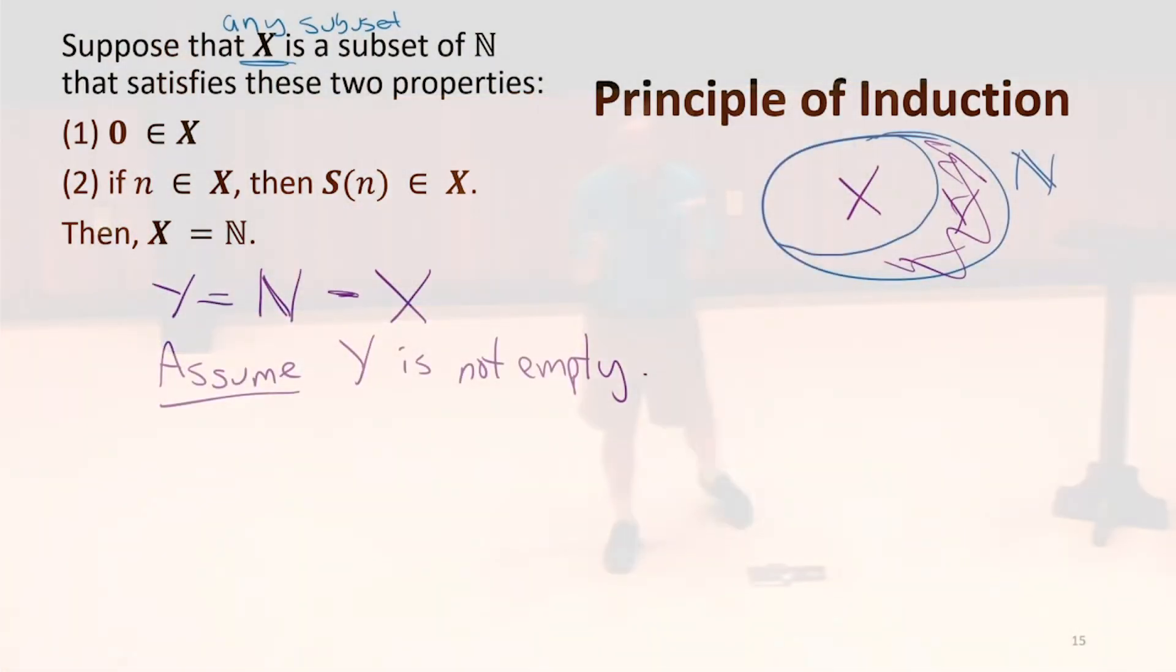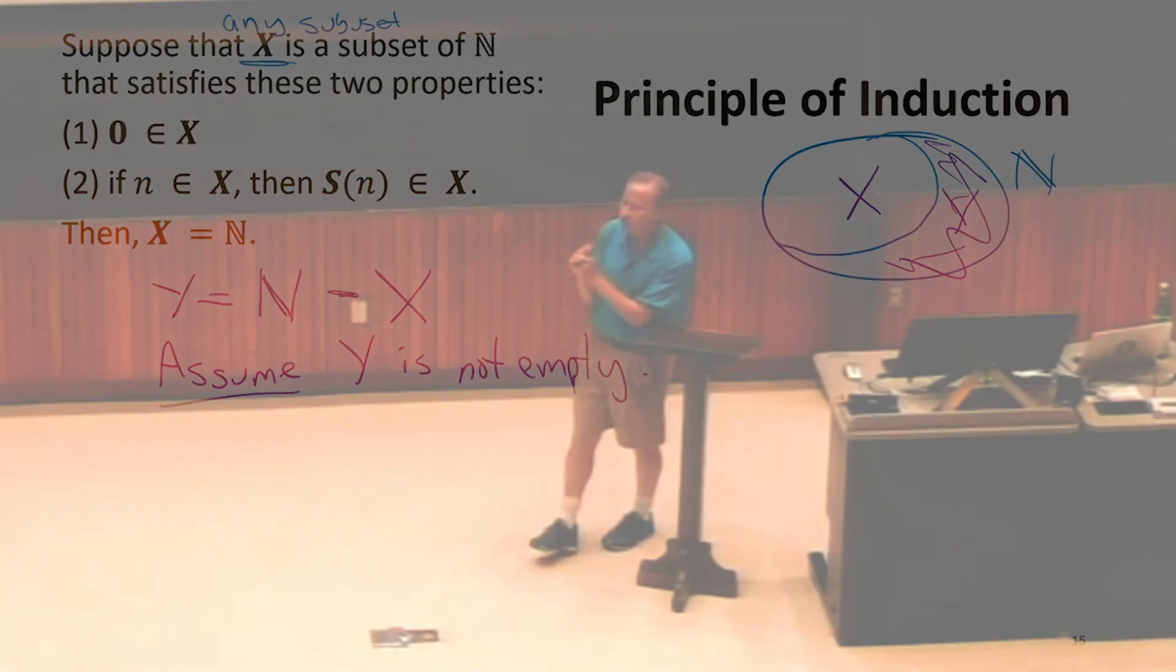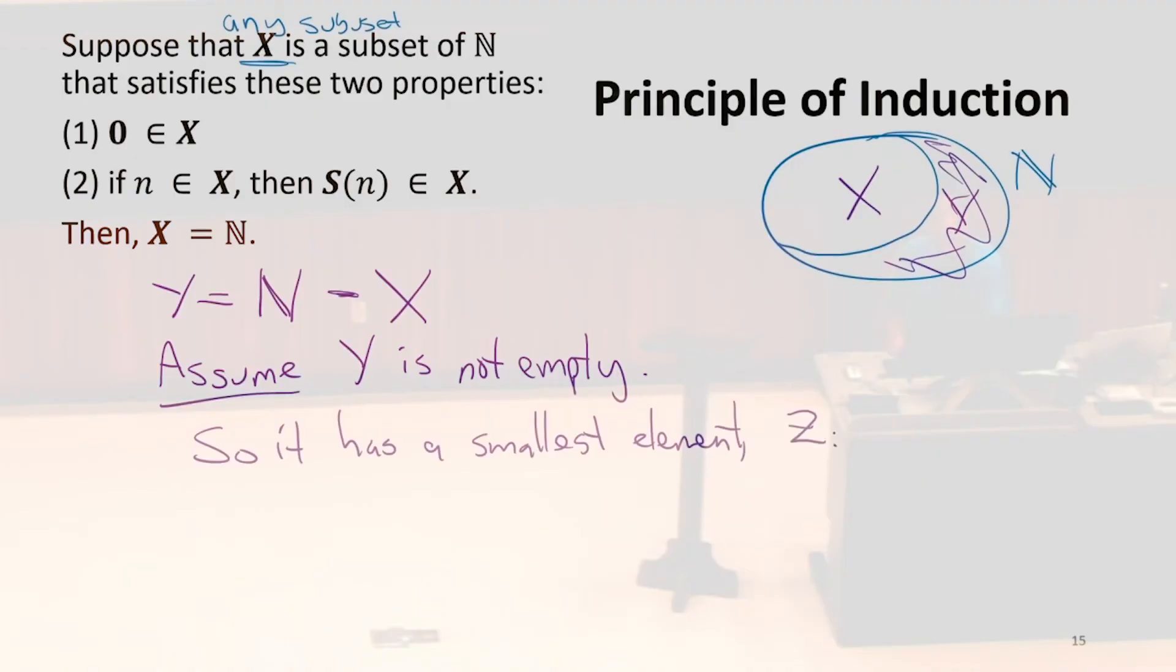If we're going to pick one element to try to get a contradiction, which one should we pick? Yeah. The smallest one. Yeah. And this is actually a subtlety that we're assuming there is a smallest element. For this set, there is, because it's well-ordered. Not all sets have a smallest element. If we don't know there's a smallest element, we would have a problem there. But for a set of natural numbers, intuitively, you should be pretty convinced that there is a smallest element. We're not going to prove that the natural numbers are well-ordered now. But we're going to assume that they are, and it has some smallest element, and we'll call that z.